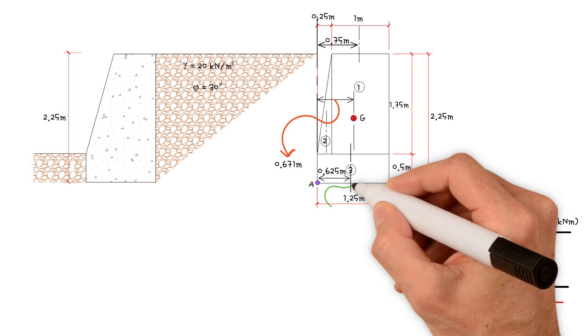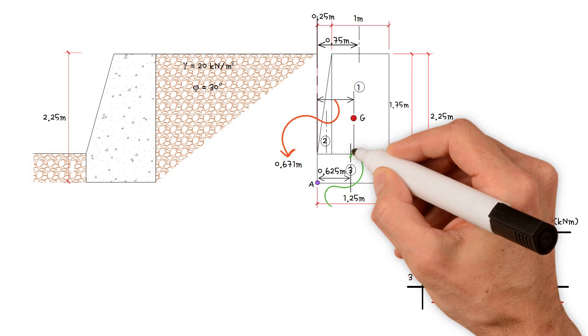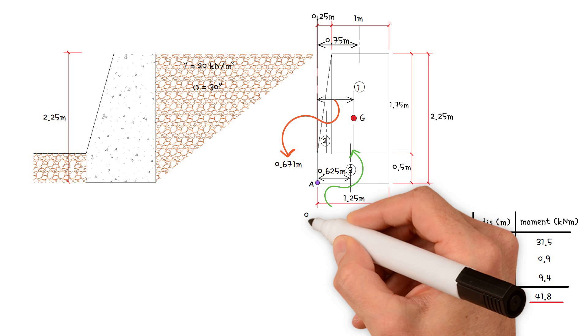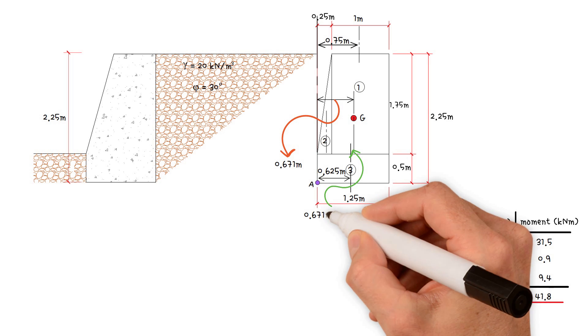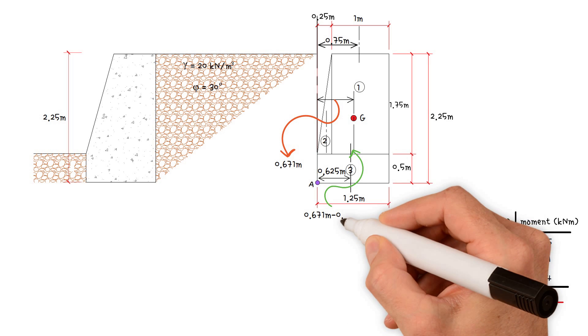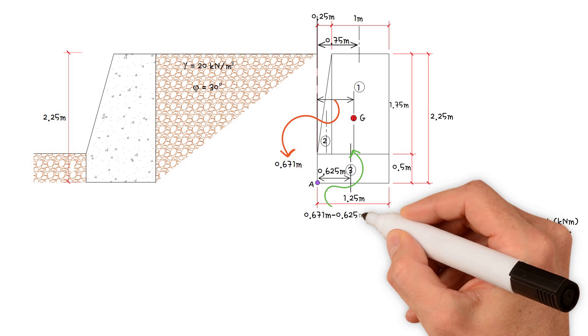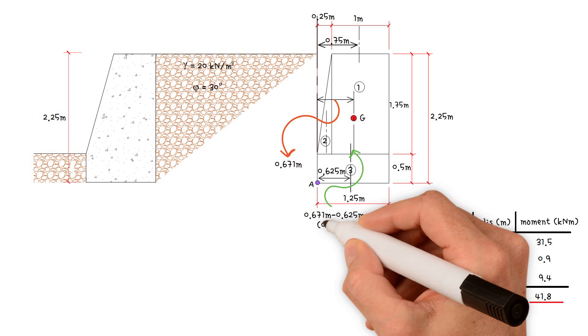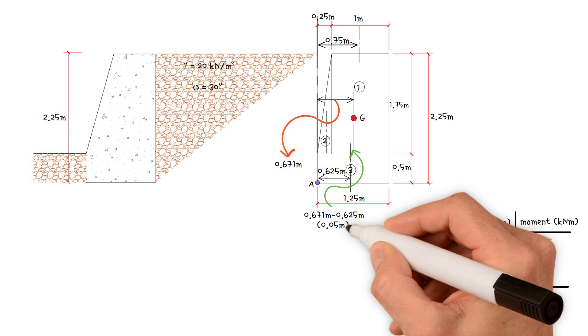As a result, the distance from the base center equals 0.671 minus 0.625 meters, which equals 0.05 meters.